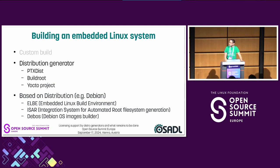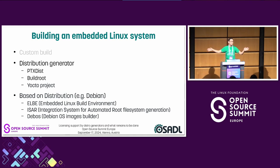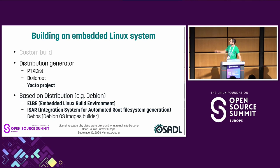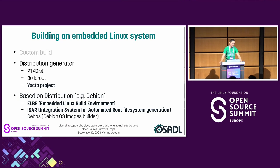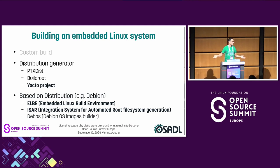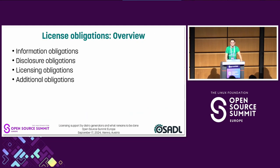I had to make a choice. For distribution generators there's ptxdist, Buildroot, Yocto. When you build Debian-based systems there's Elbe, Isar, and others. For building from source, I've been looking extensively into the Yocto project. For distribution builders I picked Elbe and Isar. When you look at my findings, they apply to every other approach as well when we consider what you need to do on your own and where a build system can support you.